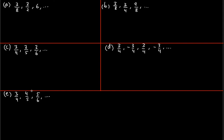Here we have to check whether each sequence can be arithmetic, geometric, or neither. First we're going to check if it's an arithmetic sequence, and then we're going to check geometric. An arithmetic sequence has to have the same distance between two adjacent terms.